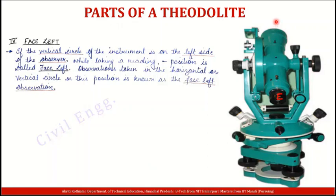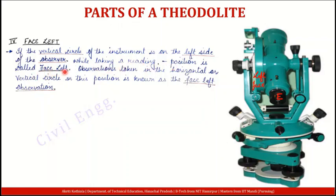To observer yahaan pe hai, facing inwards, andar ki taraf ko dekh raha hai, aur uske left hand side pe vertical circle fall kar raha hai. Kyunki yeh vertical circle left hand side pe hai to aap isko kya bolenge — Left face bolenge. Vertical circle decide karti hai — agar woh observer ke right hand side pe hai to right face ho jayega, agar left hand side pe hai to left face ho jayega. So if the vertical circle of the instrument is on the left side of the observer while taking a reading, usse bola jata hai Face left position. Observation taken in the horizontal or vertical circle in this position is known as the face left observation.